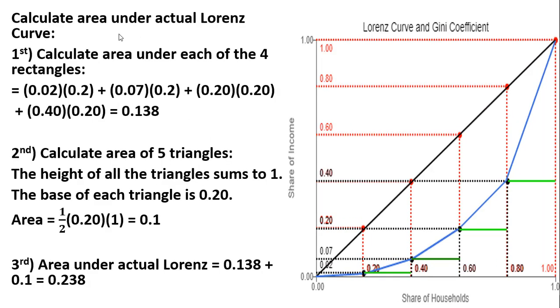The next step is to calculate the area under the actual Lorenz curve. We're going to break this area up into two parts. The actual Lorenz curve is this blue line here, this blue curve. And we're going to break this area into rectangles and triangles.